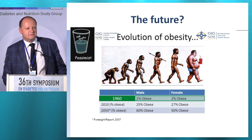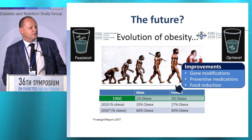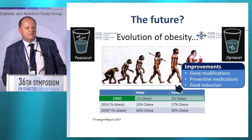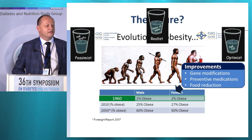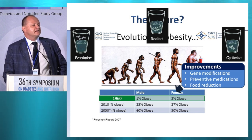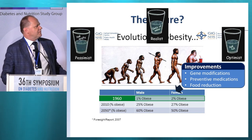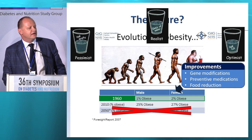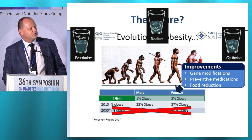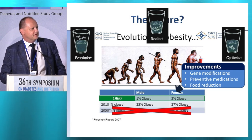We also have an optimistic view: that with gene modifications, preventive medications, and serious food reduction, we have a possibility to stop this. But I think the realistic answer is that we have to stop obesity at its current rate, and that we will be happy if in 2050 we are still at the same position as we are today according to obesity rates. Thank you for your attention.